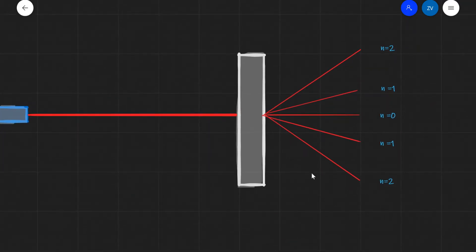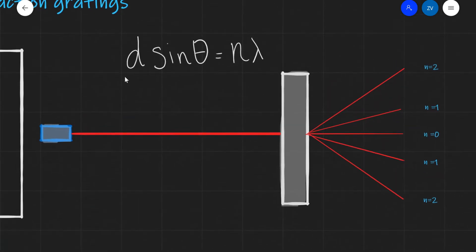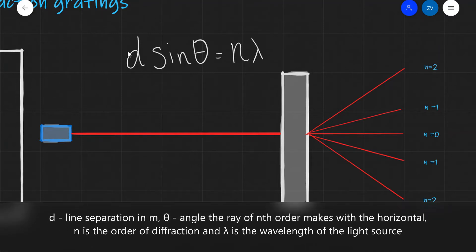The equation determining the angle of each diffracted ray is: d sin θ = n λ. Here, d stands for the line separation, which is 1 over the number of lines per meter.